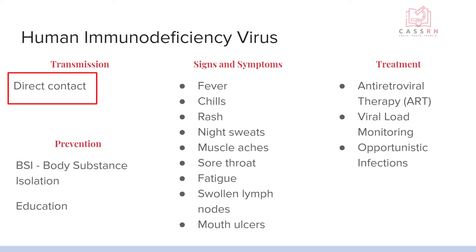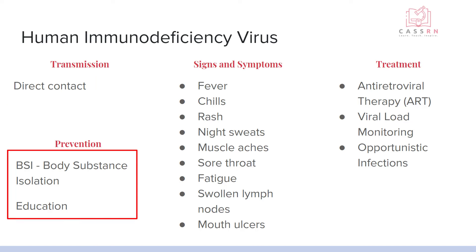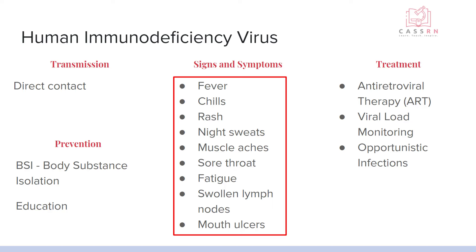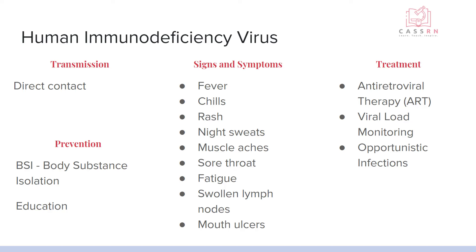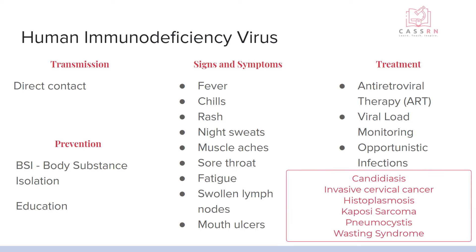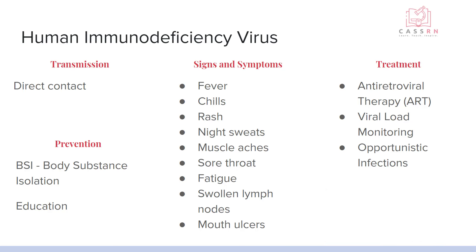HIV is a direct contact virus — direct contact with someone infected via semen, blood, vaginal fluids, breast milk, or rectal fluids. Prevention is body substance isolation: wearing gloves when coming in contact with blood, wearing condoms when having sex, and education. The signs and symptoms are very similar to having the flu, and a lot of people will have flu-like symptoms when they initially get the virus, then recover. After a while, it starts to attack the immune system and that viral load gets really high. This can hide in your body for up to 10 years without you knowing you have HIV.